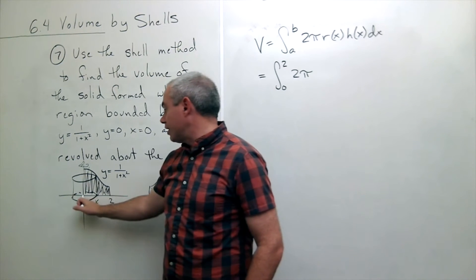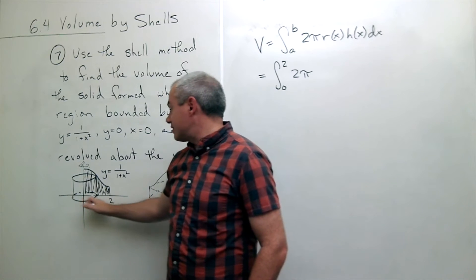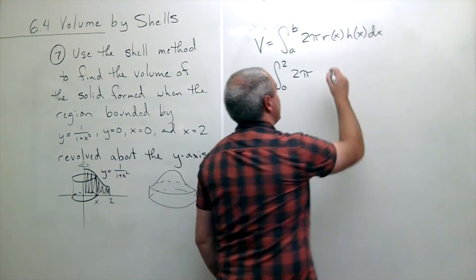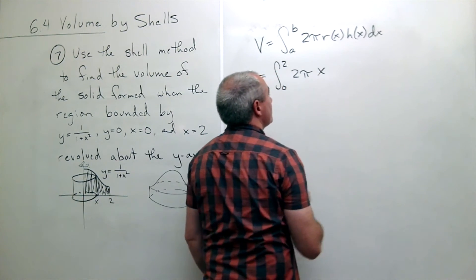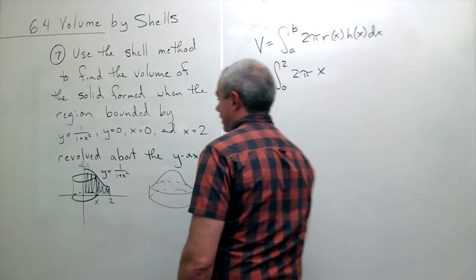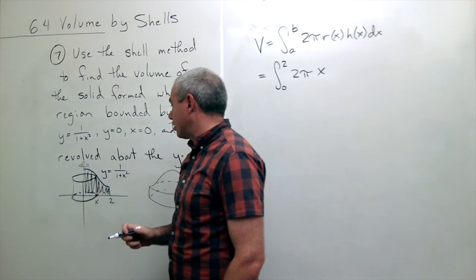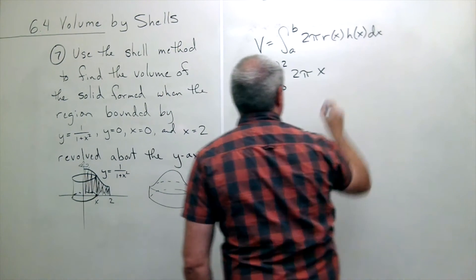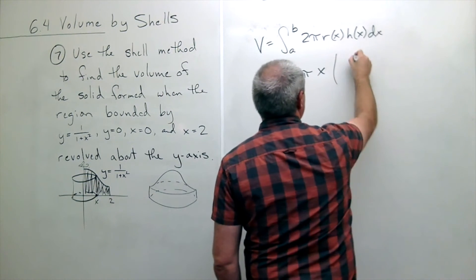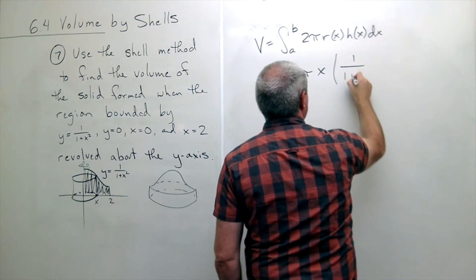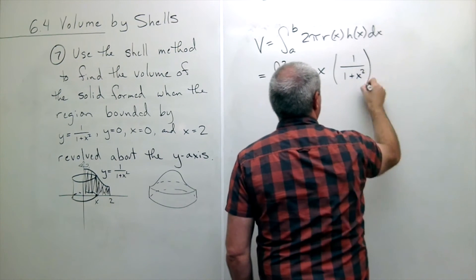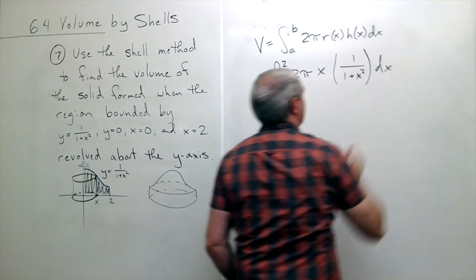Well the distance from the middle to x is x. So the radius in this case is x and then h of x is the height of that cylinder. And the height of this cylinder is the functional value which in this case is 1 over 1 plus x squared dx.